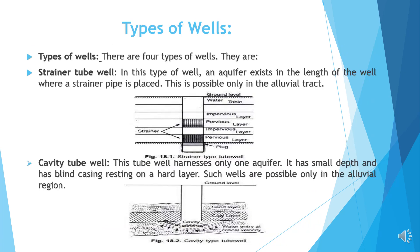The types of well. There are four types of wells. The first one is the strainer tube well. In this type of well, an aquifer exists in the length of the well where a strainer pipe is placed. This is possible only in the alluvial tract. Here, I have shown a picture of a strainer tube well.